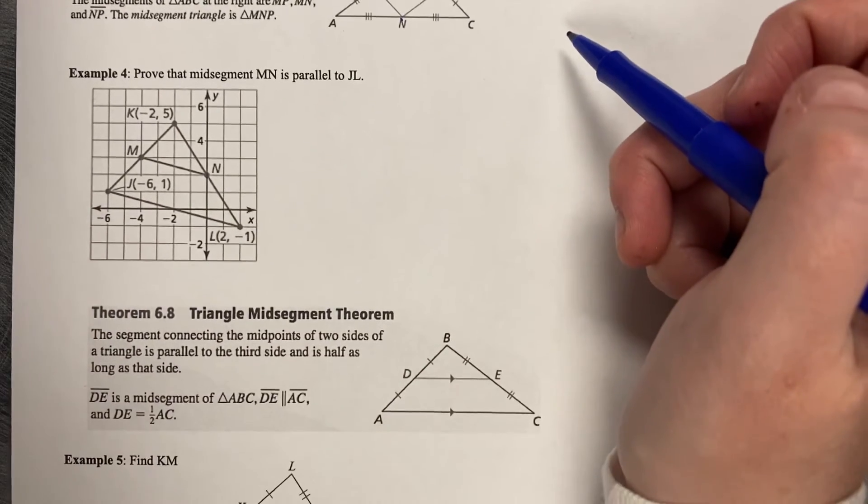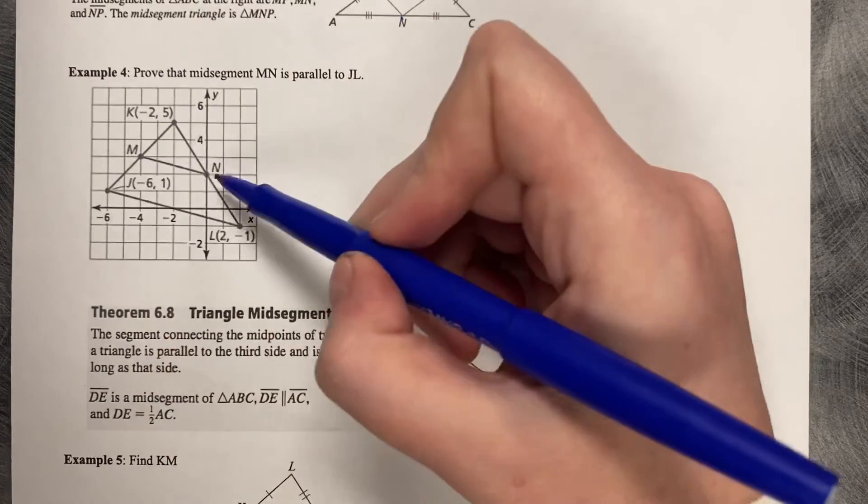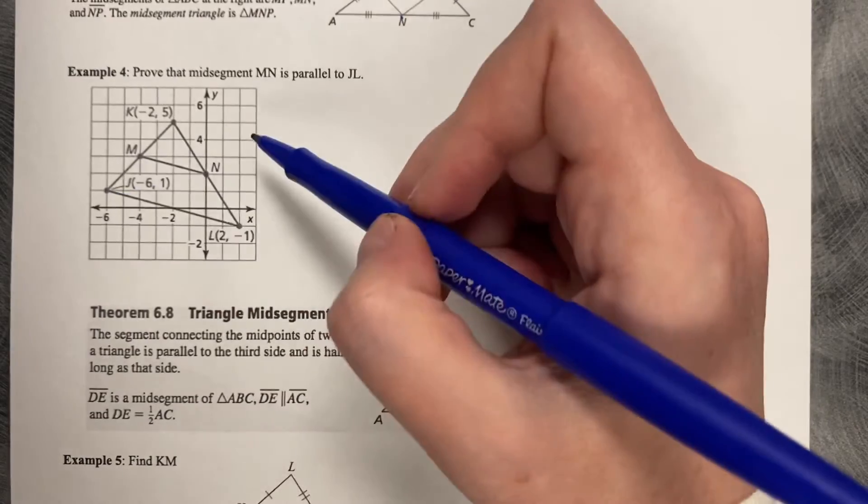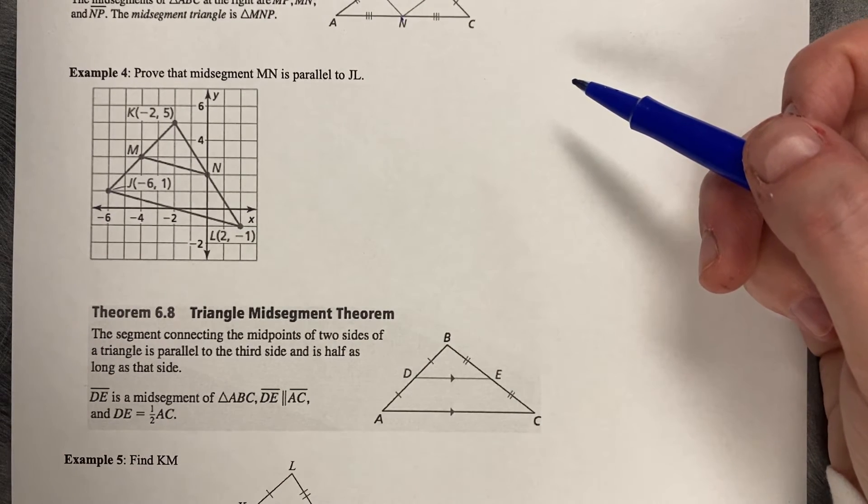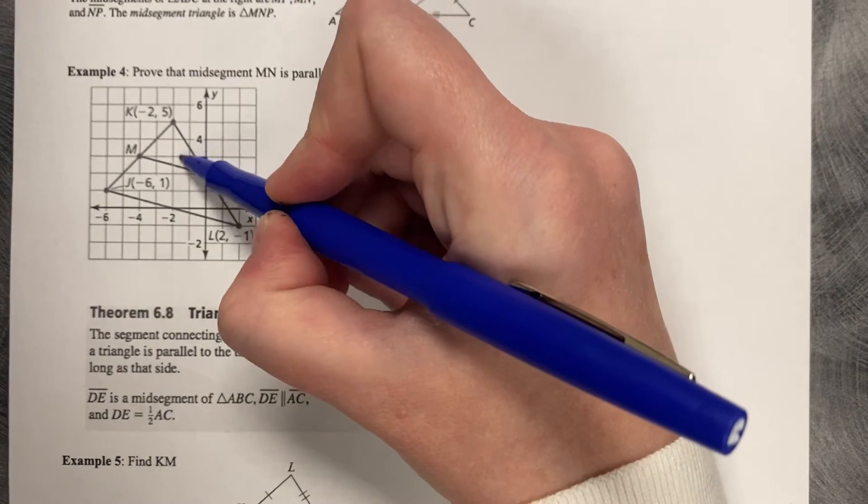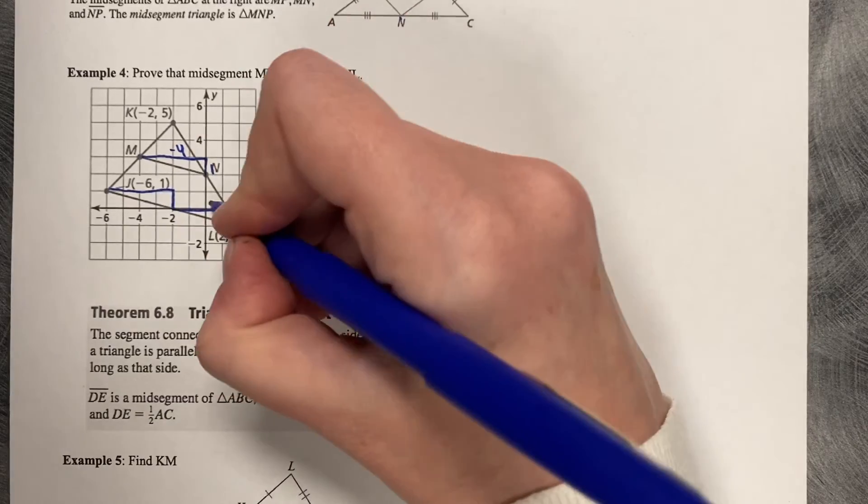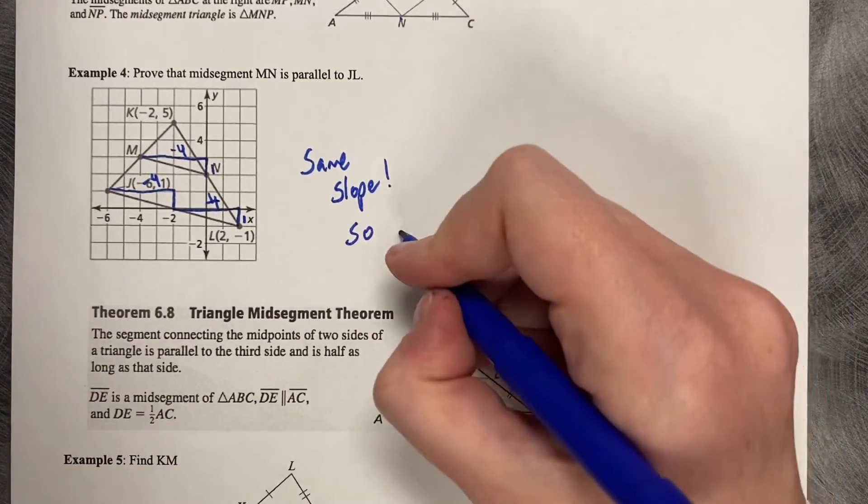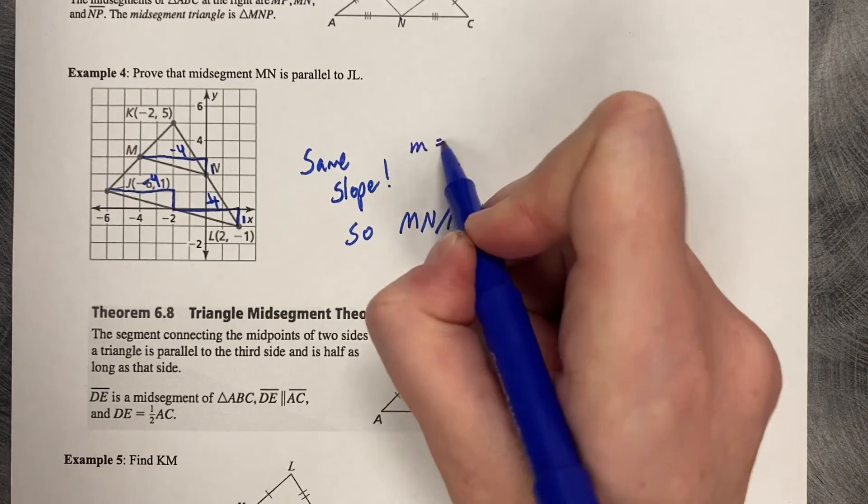So example number four, something that you need to note is that mid-segments create parallel lines. So here is our diagram. M is the midpoint of this side length. N is the midpoint of this side length. And they want us to prove that MN is parallel to JL, this bottom one. So because we're given a grid on this example, you can just use the grid to find the slope if you want to, or you can calculate it by hand using the slope formula. I prefer to just use the grid, so let's check it. So I go up one over four, up one over four, up one over four. So they have the same slope, so they're parallel. Remember that double slash means parallel. They have the same slope of negative one fourth.